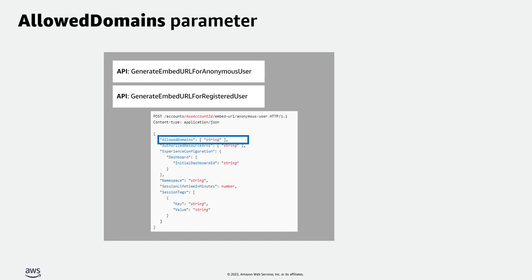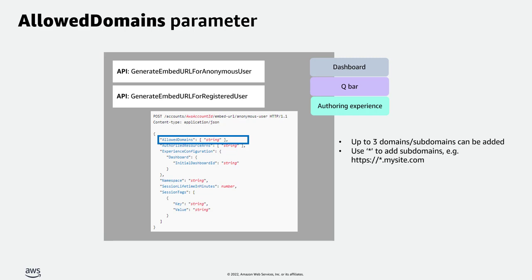Let's look at the request of one of these APIs. In particular, there is a new parameter called allow_domains, where you can add your domain where you want to embed the dashboard by passing it as a string parameter. You can use this when embedding dashboards, a Q bar, or the authoring experience. You can add up to three domains or subdomains. To add a subdomain, use an asterisk — for example, https://*.mysite.com — which will allow all subdomains of mysite.com. The domains supported are HTTPS only, except we have allowed localhost via HTTP.